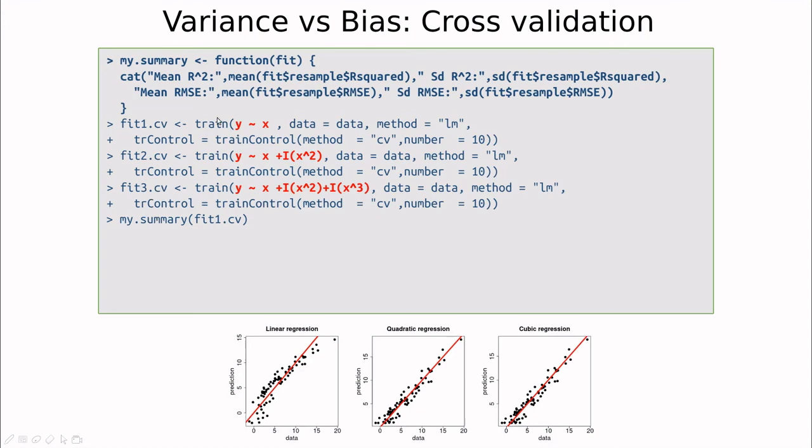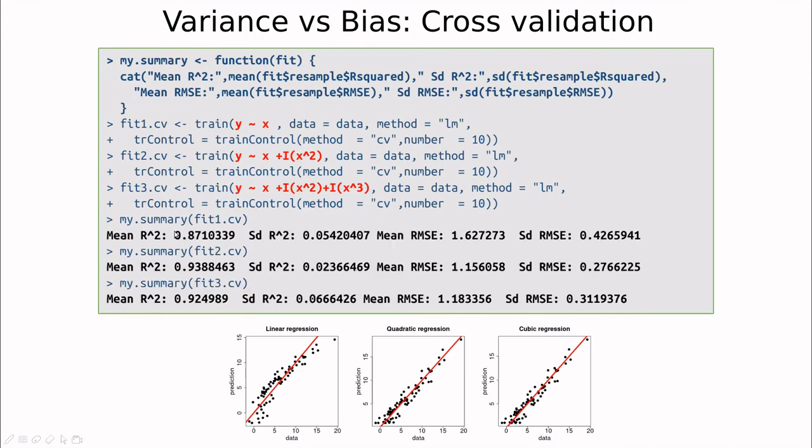Okay, so let's plot my summary for fit one, and as you can see here, we see that the mean r squared is 0.87, not bad, and the standard deviation is 0.05. So that would mean that the r squared would be something iterative with something between 0.87 plus minus twice this one.